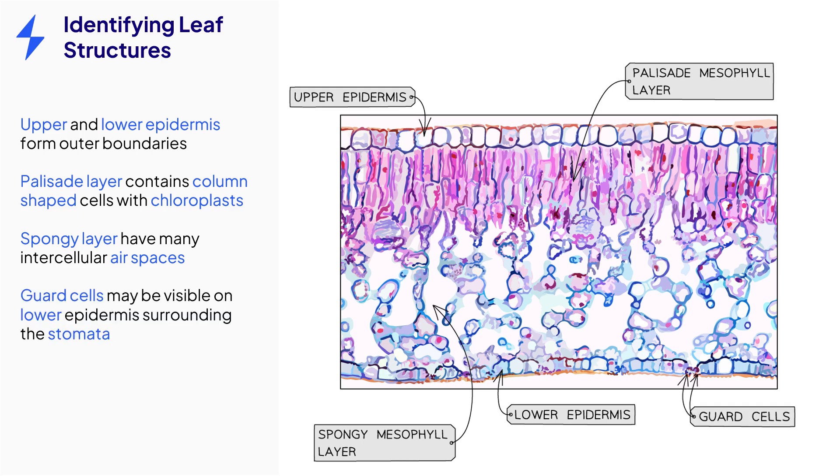Keep a lookout for guard cells in the lower epidermis. They can be identified as they are slightly different in size and appearance to the other epidermal cells. They surround the stomata through which gas exchange occurs.